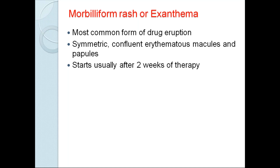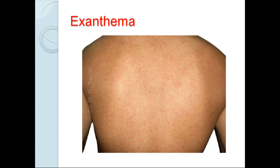Next is morbilliform eruption, also called exanthem — the most common form of drug eruption. Here you will see symmetric, confluent, erythematous macules and papules, usually starting after two weeks of therapy. Simple red macules and papules are present. This is also how SJS and TEN will start — initially as erythematous lesions, slowly developing into blisters, then effacement of skin, and also mucous membrane involvement.